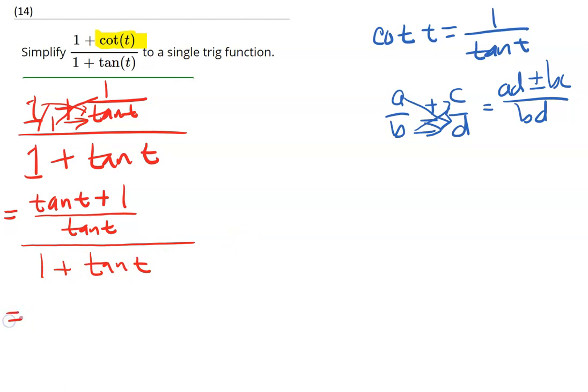Now if you remember how to divide fractions, you either multiply by the reciprocal or keep it, change it, flip it. So you keep the top tangent t plus 1 over tangent t, and you change it to multiplication, and then you do the reciprocal of this, which is 1 over 1 plus tangent t.